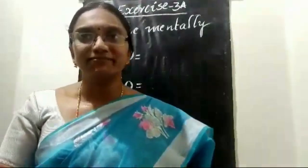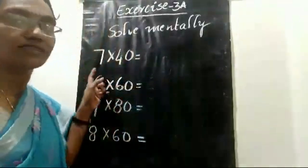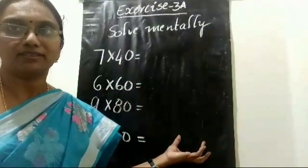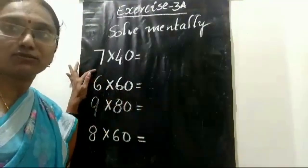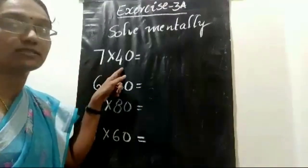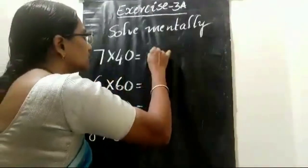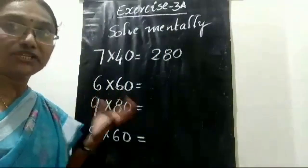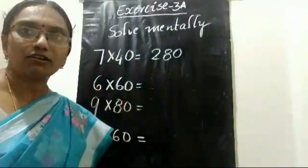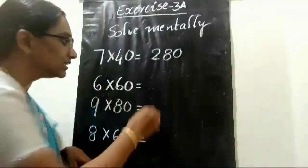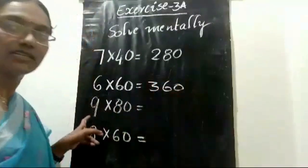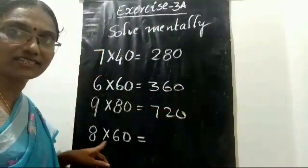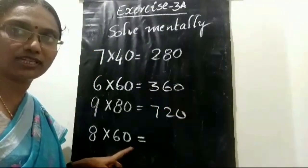Let us solve a few sums mentally. See here: 7 into 40. You know tables up to 9, so 7 fours are 28, then write one zero — that gives 280. Can you tell me 6 into 60? 6 sixes are 36, and one zero gives 360. Next: 9 into 80 — 9 eights are 72, and one zero gives 720. And 8 into 60 — 8 sixes are 48, and one zero gives 480.